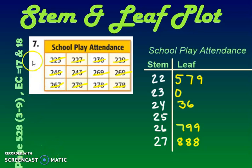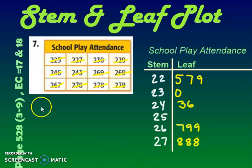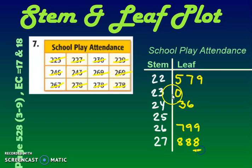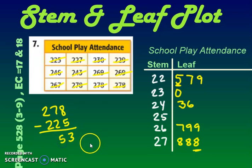Problem number eight asks things like: what's the range, what's the median, what's the mode? And also the typical question: which measure of central tendency is most affected by outliers? Let's analyze this data. Our range is the biggest minus the smallest: 278 minus 225 = 53. So 53 people is our range.